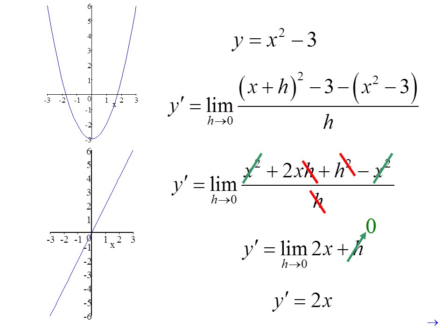And if we graph the derivative, we see that the derivative matches the slope. At x equals zero, the slope is zero, and the derivative is zero. If we look at the original function, there's a negative slope on the left-hand side and a negative derivative, a positive slope on the right-hand side, and a positive derivative.